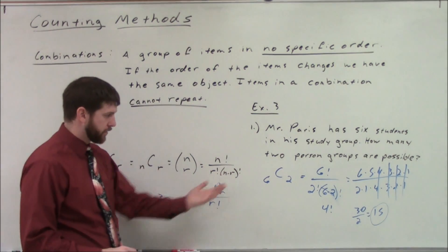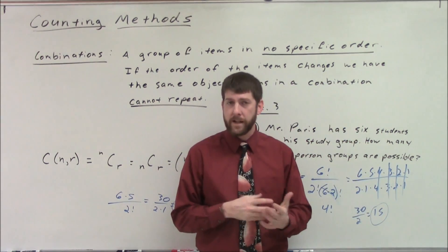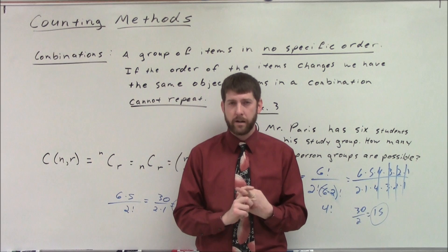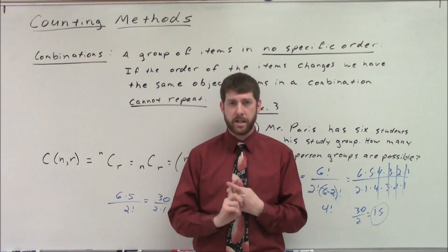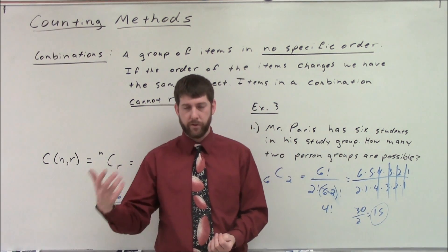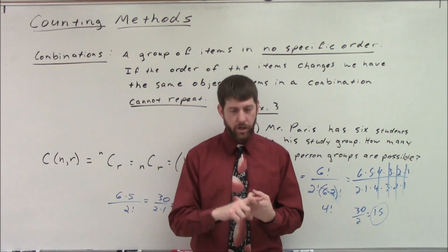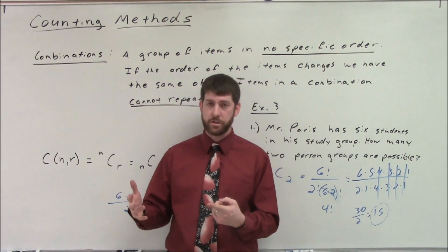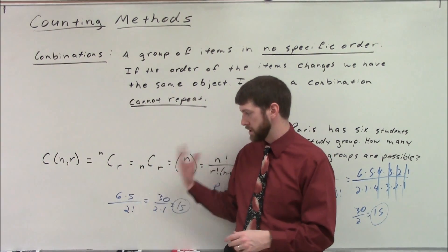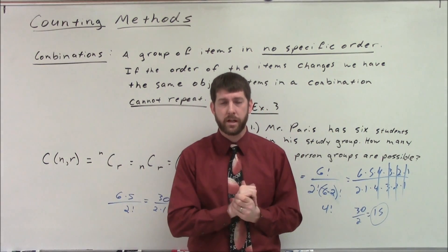Let's do a quick recap. If items can repeat, it's just a counting principle — count choices for each slot and multiply. If items cannot repeat, ask: does order matter? If yes, it's a permutation. If no, it's a combination. Once you know which of the three you're dealing with, it's just a matter of which numbers to multiply together. That's it for counting methods — see you in class tomorrow!